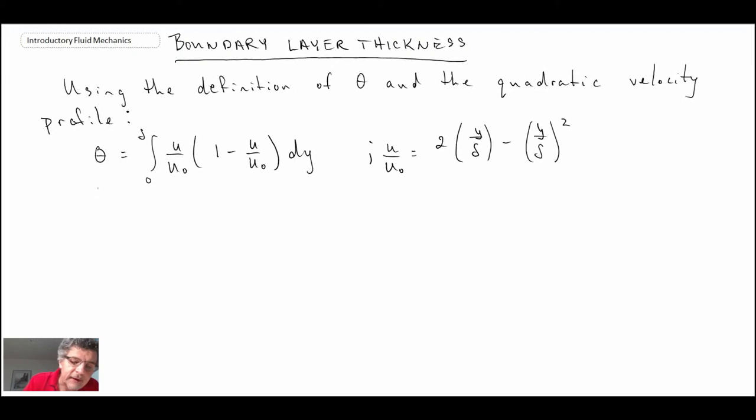Von Karman had this relationship for the momentum thickness and this one for his quadratic velocity profile subject to the boundary conditions we talked about in the last segment. He plugged that profile into the momentum thickness and came up with this relationship here. We'll refer to this as equation A.